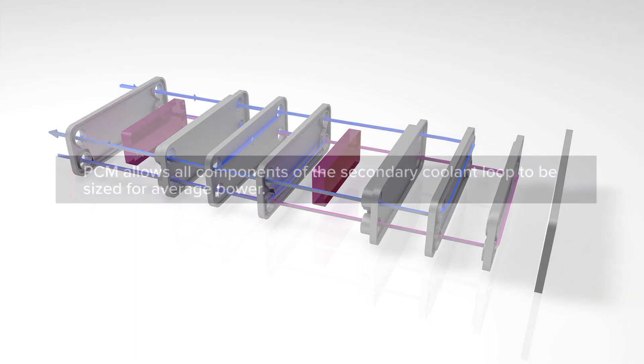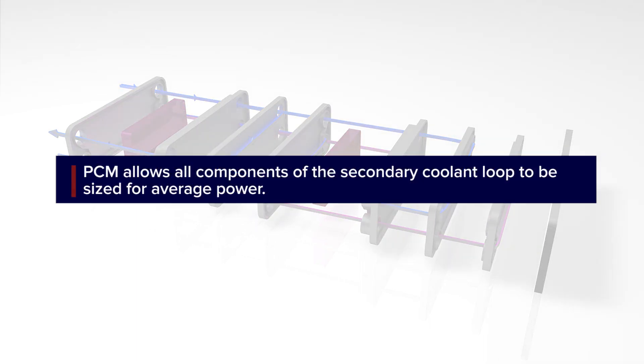The introduction of the PCM allows all components of the secondary cooling loop to be sized for average instead of peak power.